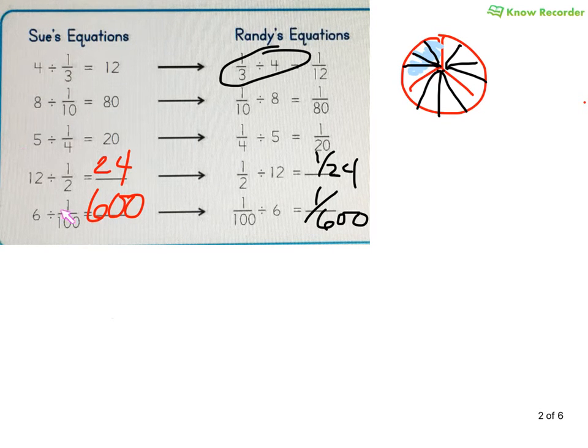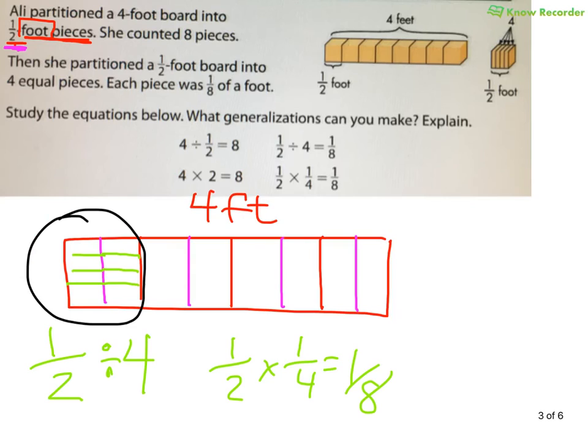Now what I want to talk to you about is if we look back at this problem. Sue used the same method every time. She divided a whole number by a fraction. Randy used the same method every time. He used a fraction divided by a whole number. In this problem, we did not use the same method. Here we divided a whole number by a fraction. Here we divided a fraction by a whole number. Now while they might look very similar that we switched the numbers, what we're dividing is different. We're still dividing, but the way we're dividing and what we're dividing is different.